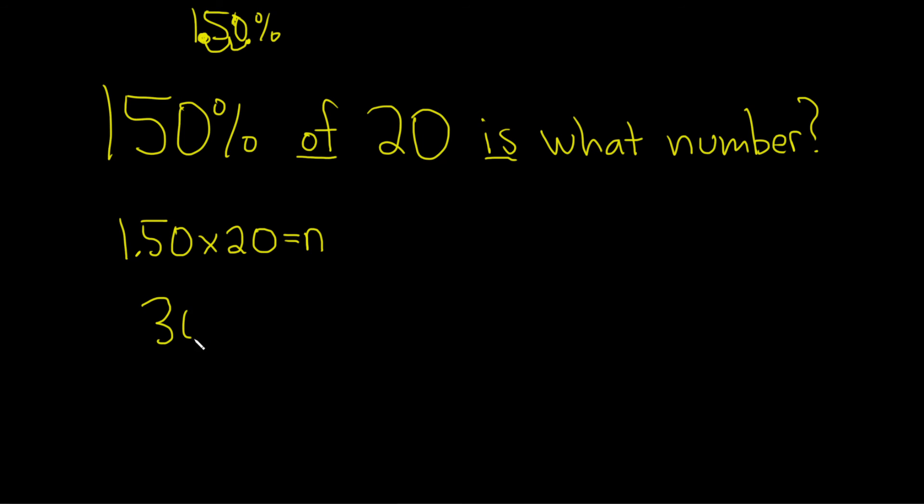So 30 is equal to n. If you write this backwards, you get n equals 30. And that should be the final answer.